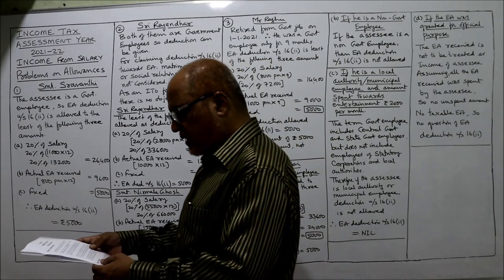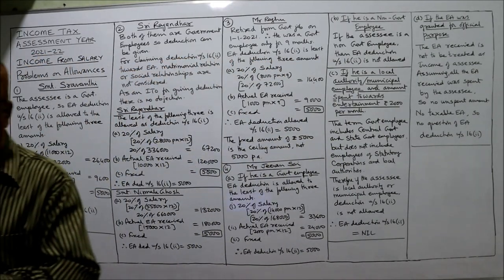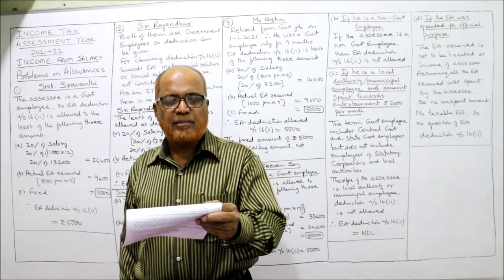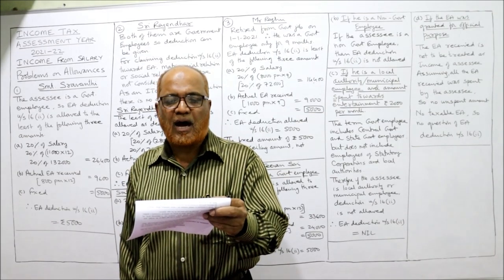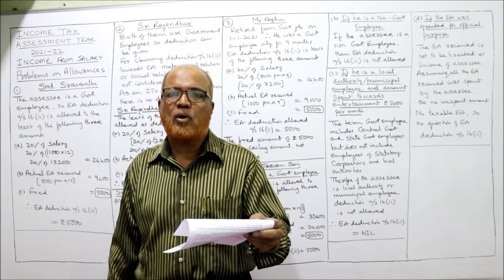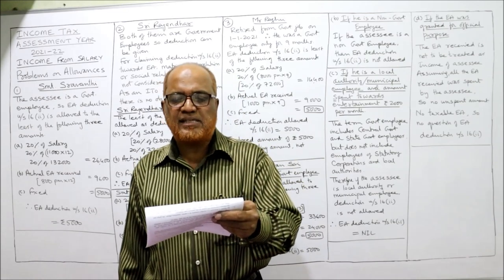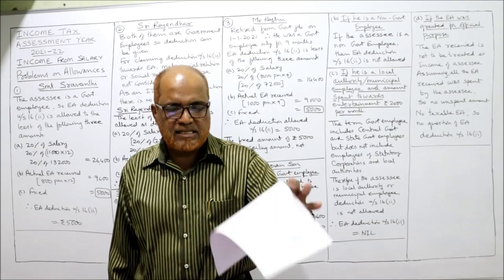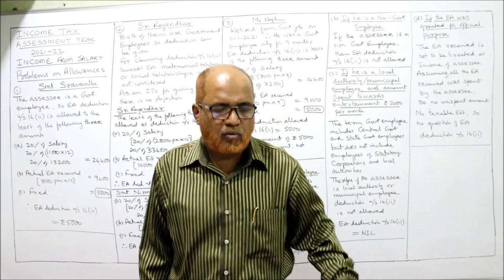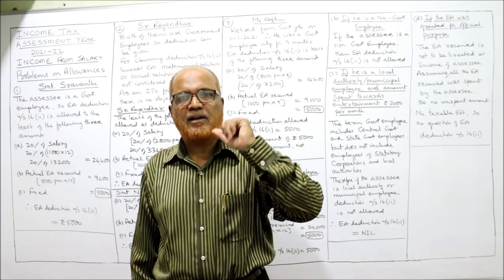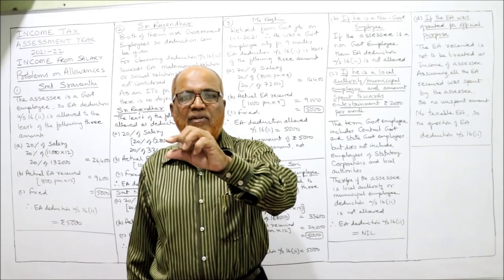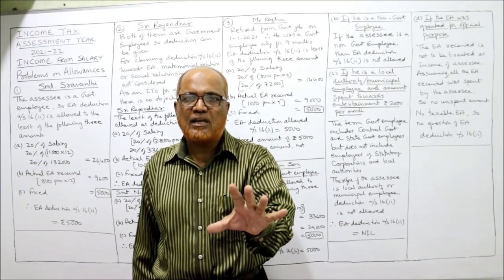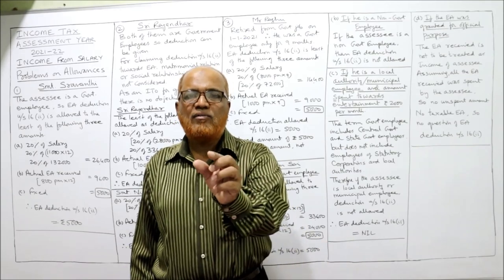Now I'm going to start the first problem on allowances. Srimathi Sravanti is working as an officer in the Andhra Pradesh government — so she is a government employee. Her salary particulars are: basic pay Rs. 11,000 per month, CCA Rs. 900 per month, entertainment allowance Rs. 800 per month. We need to compute the EA deduction. The rule is: whatever EA is received is fully taxable under allowances, and then deduction under Section 16-2 is given if eligible.